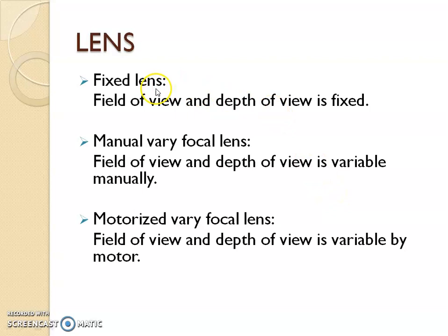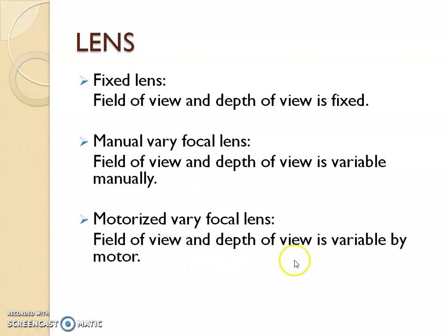Coming to lens — there are fixed lens, manual varying focus focal lens, and motorized varying focal lens. These are very common in modern cameras. In a manual varying focus lens, the camera has to be manually adjusted to find the view. In the motorized version, the field of view and depth are variable by a motorized automatic mechanism.